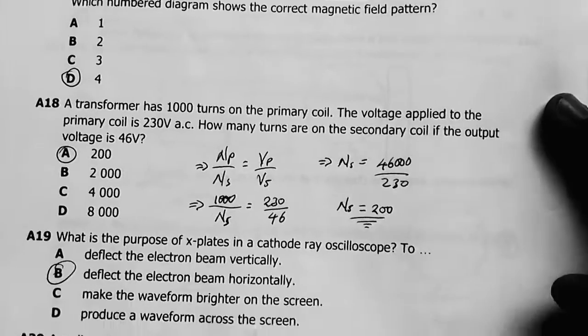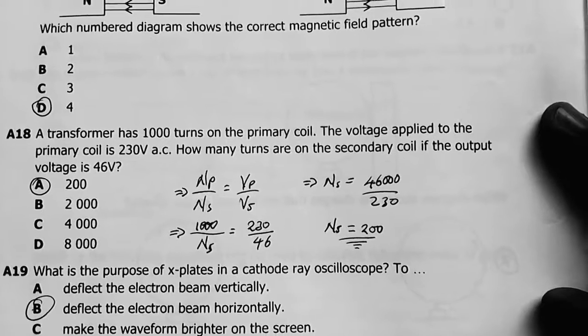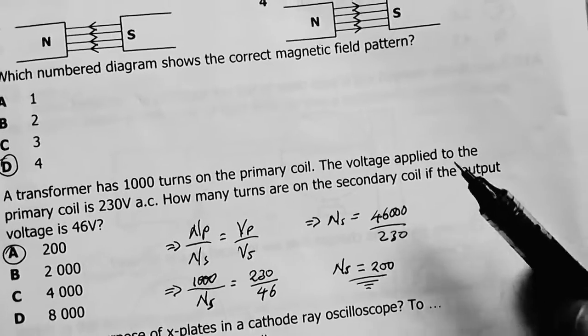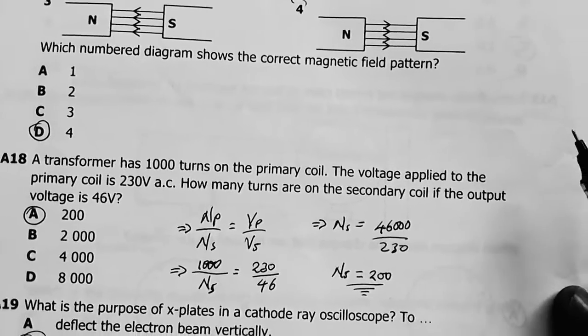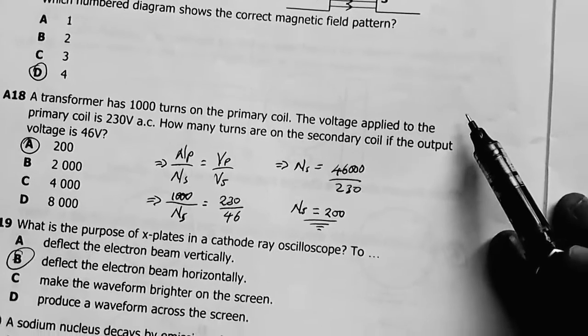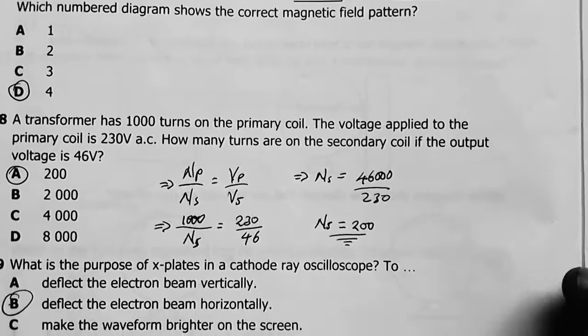Number 18: A transformer has 1000 turns in the primary coil. The voltage applied to the primary coil is 230 volts AC. How many turns are in the secondary coil if the output voltage is 46 volts?